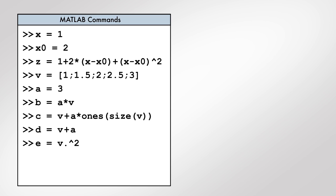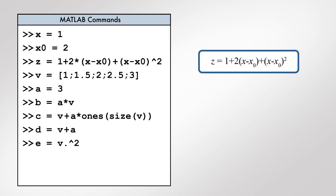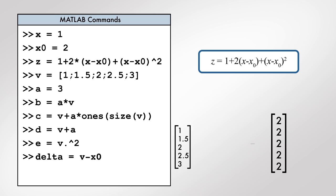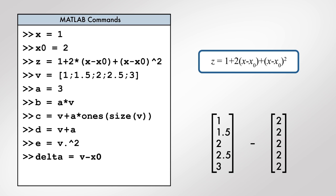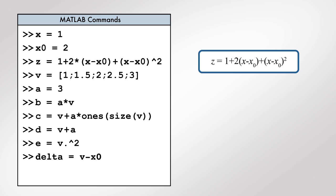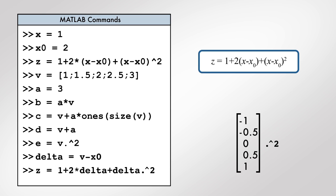Now we can compute the mathematical expression for the entire vector v. In this command, we subtract a scalar from a vector, and MATLAB automatically expands the scalar into a vector of the appropriate size. The result, delta, is a vector the same size as v, in which the ith element is the difference between the ith element of v and x0. We can now use delta to compute the mathematical expression, as in this command. The last term uses the element-wise power operator to square each element of delta.